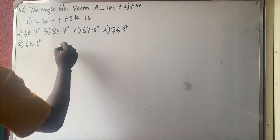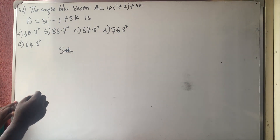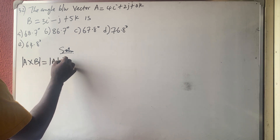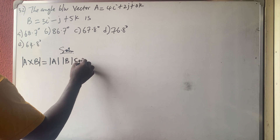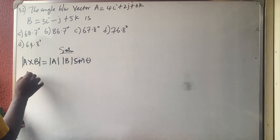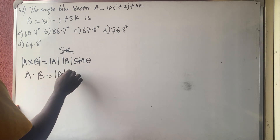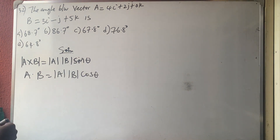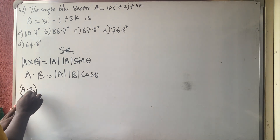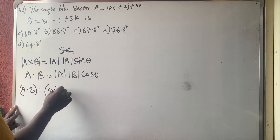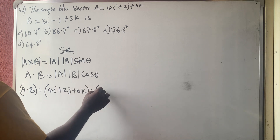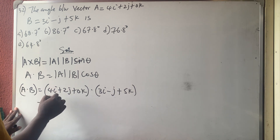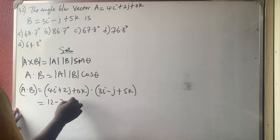I prefer using the dot product formula: A·B = |A||B|cosθ. So I need A·B first. A·B = (4)(3) + (2)(−1) + (0)(5) = 12 − 2 + 0 = 10.